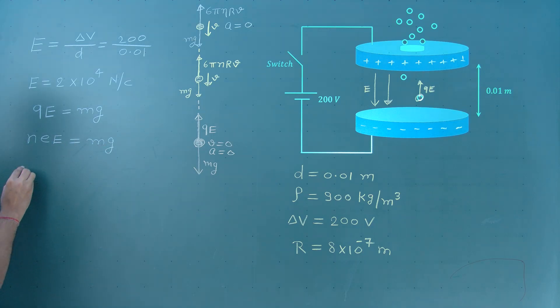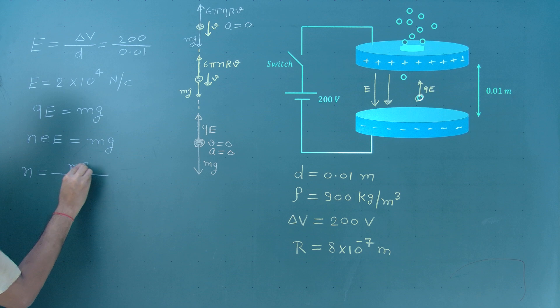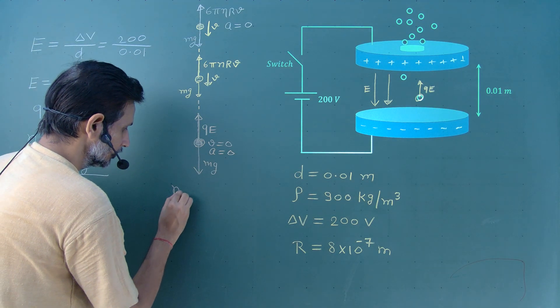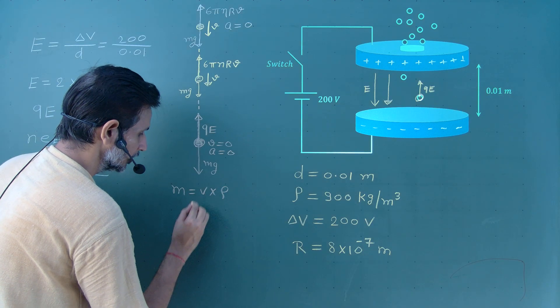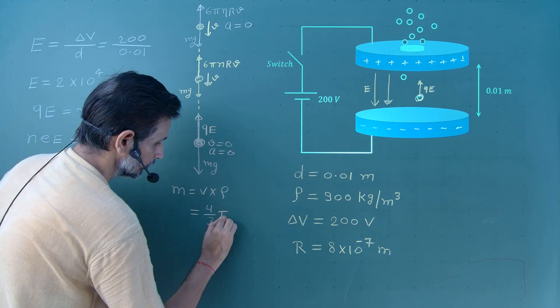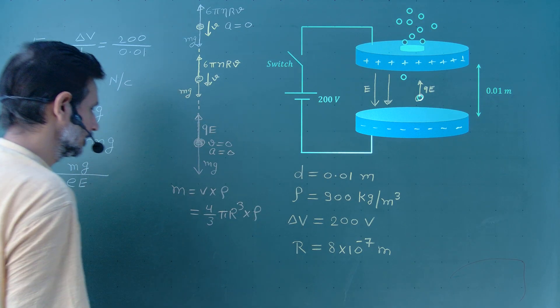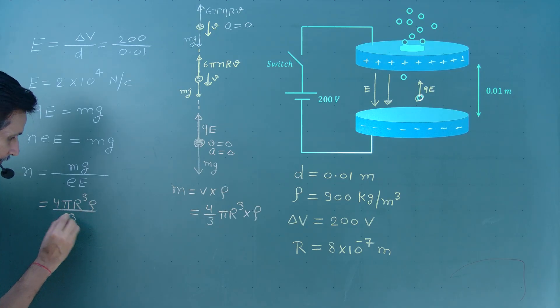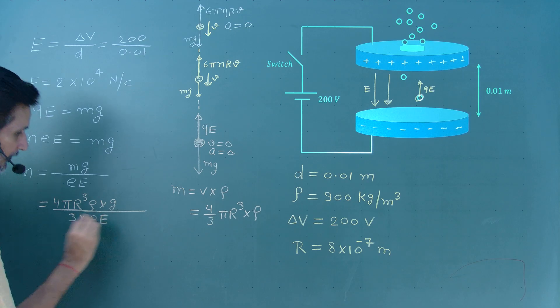Now, we have to calculate number of electrons. So, number of electrons should be equal to Mg divided by small e big E. Now, we know all the things but in case of mass, mass is not given directly. It is given in the form of density and radius. As the oil drop is spherical, we can say that mass equal to volume into density. What is the volume? Volume of a sphere 4 by 3 pi R cubed into rho. Now, let us put all these numbers.